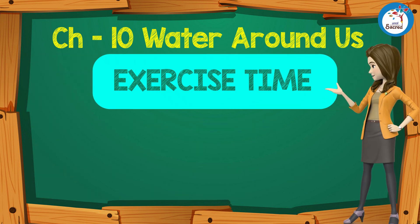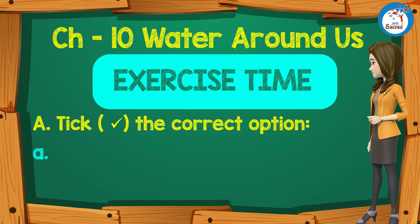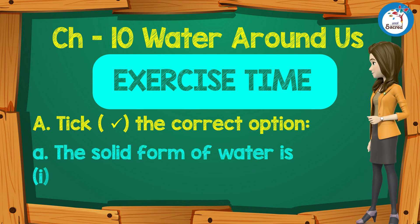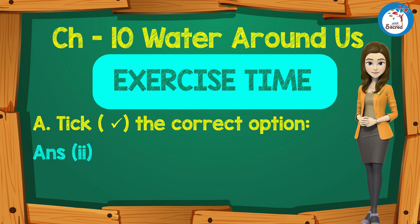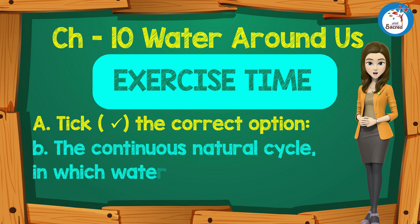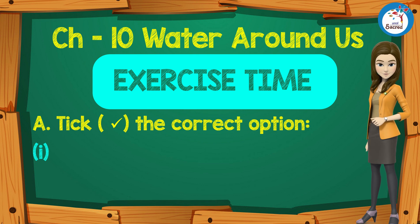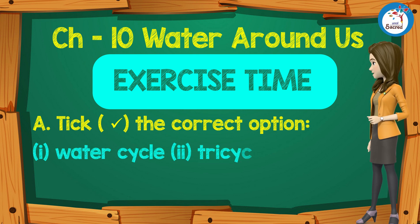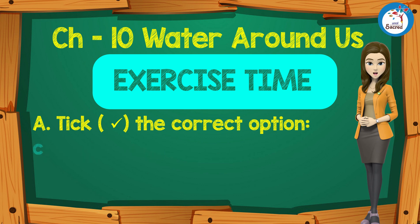Exercise time. A. The solid form of water is: First — water, Second — ice, Third — water vapor. Answer: ice. B. The continuous natural cycle in which water changes its form is called: First — water cycle, Second — tri-cycle, Third — bi-cycle. Answer: water cycle.